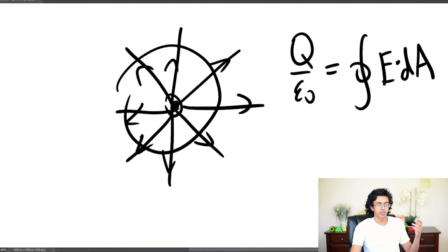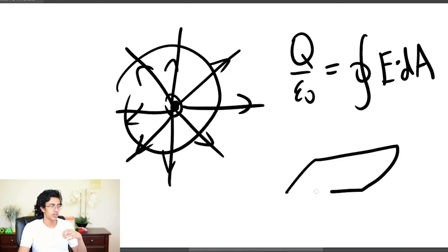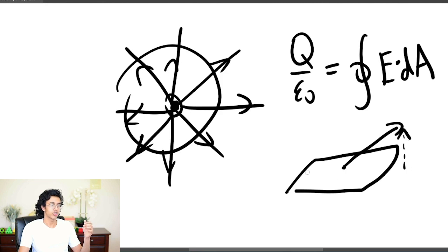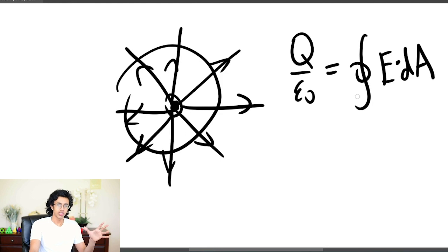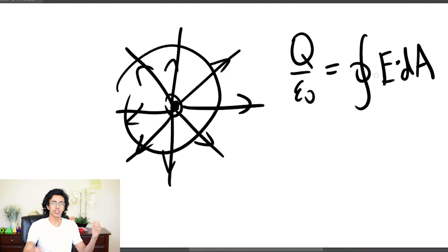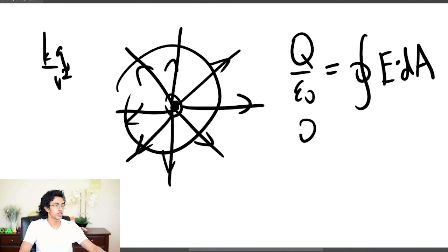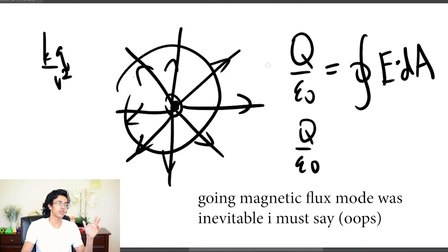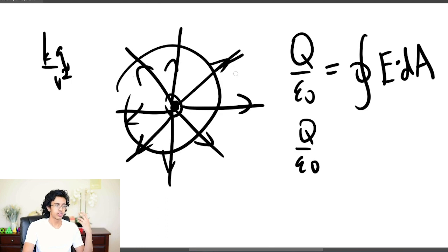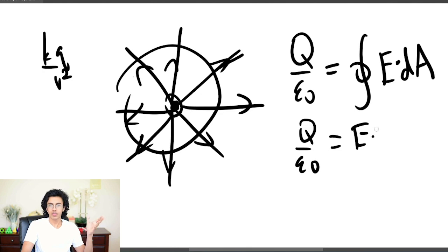Gauss's Law says the integral over a closed surface equals Q over epsilon-naught. The right side is your electric flux formula — the dot product takes the perpendicular component of the electric field and multiplies by the area. So essentially your flux is constant: E dot A is constant, meaning E is inversely proportional to area. This makes KQ/R² so much more sensical. Q over epsilon-naught equals the perpendicular E times the area, and for a sphere E is perpendicular everywhere, so it's E times 4πR².